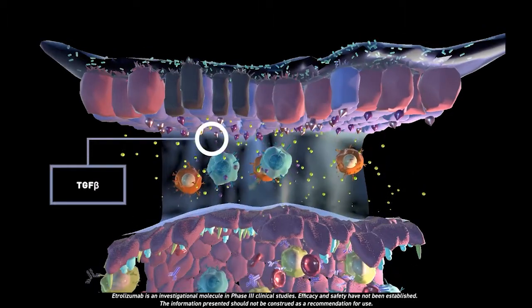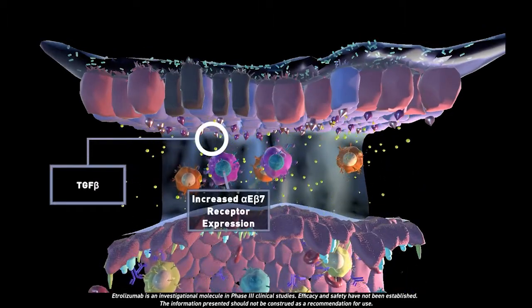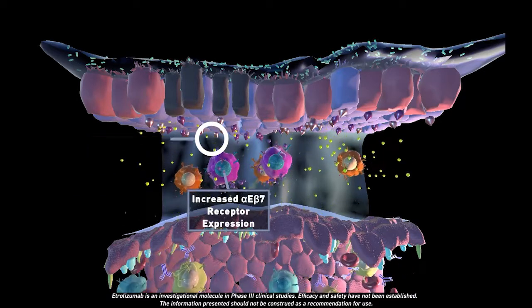T cells in the lamina propria, when exposed to TGF-beta, start expressing alpha-E-beta-7 receptors.